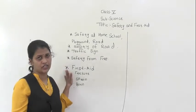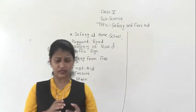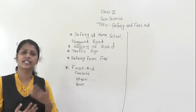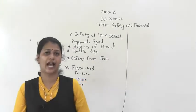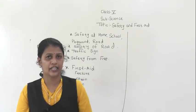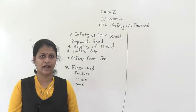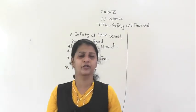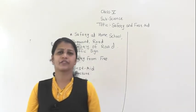Under First Aid, we discussed fractures — a fracture is a crack or break in the bone. Then we discussed sprains — a sprain is when a joint is twisted, like twisting your hand or foot. We also discussed burns: minor burns and severe burns, and what to do in each case. We discussed animal bites, including dog bites and snake bites. We also discussed what to do if a person has swallowed poison.